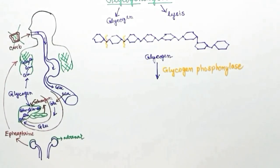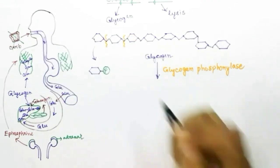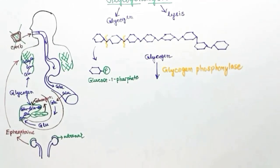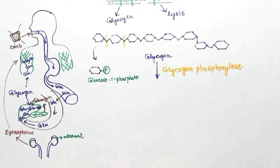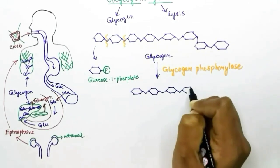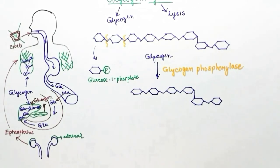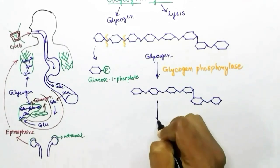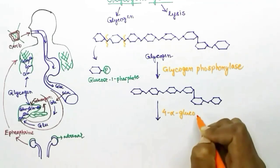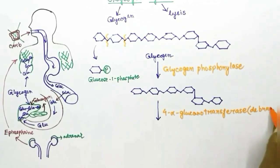First, the enzyme glycogen phosphorylase breaks the bonds between two glucose units in the linear chain. It breaks off one glucose molecule and adds one phosphate group to it, releasing glucose-1-phosphate. The branches of the glycogen are broken down into glucose-1-phosphates until four glucose molecules remain on the branch.